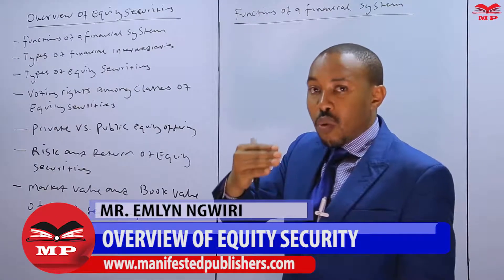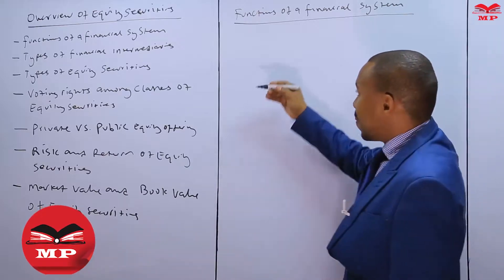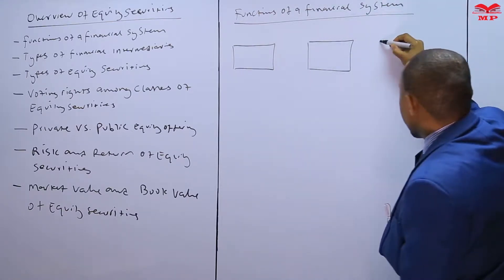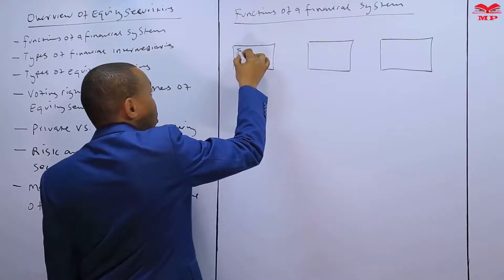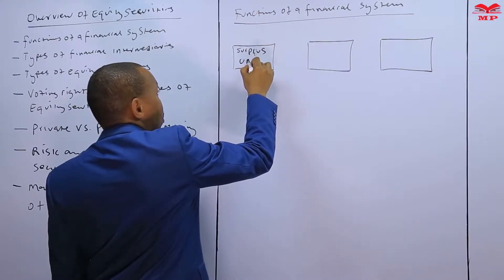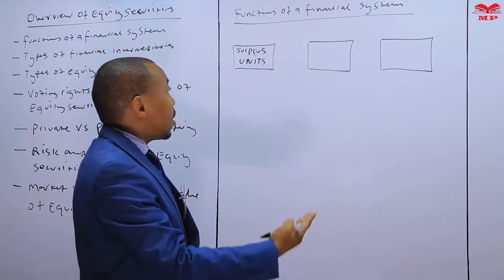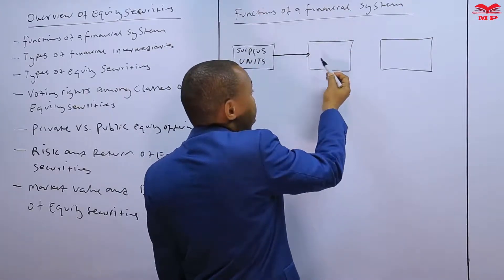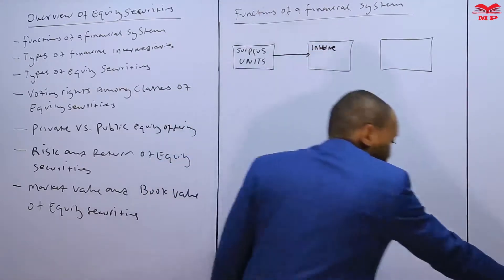First, I need to explain what a financial system is. The best way to describe a financial system is by using a diagram. The financial system has three very key institutions or variables: the first are the surplus units — individuals and institutions who have excess money that they do not have immediate use for. This middle rectangle here is the intermediary.